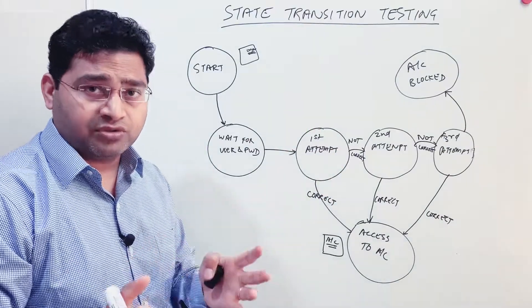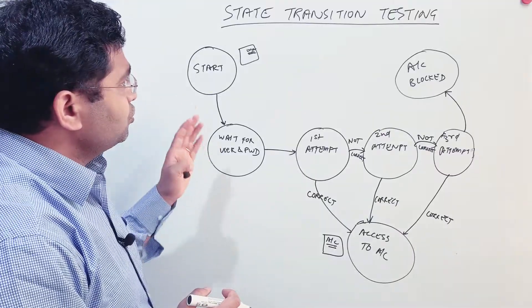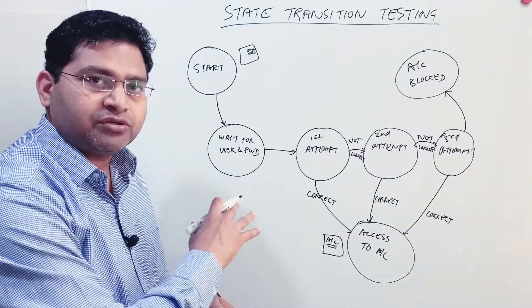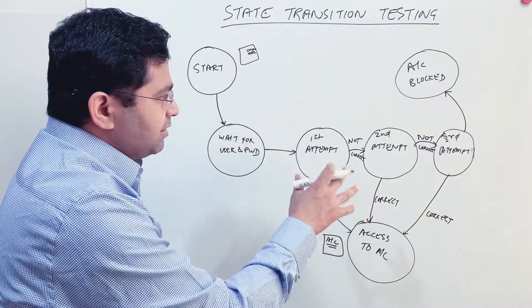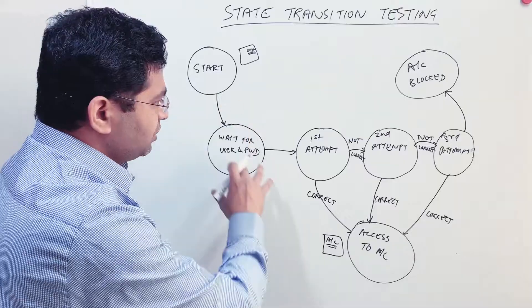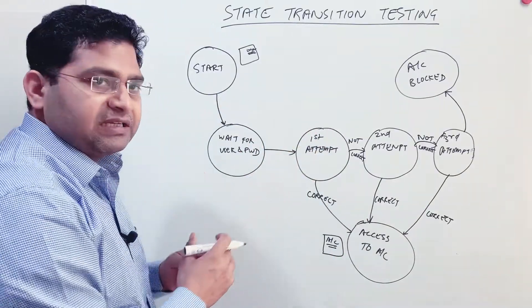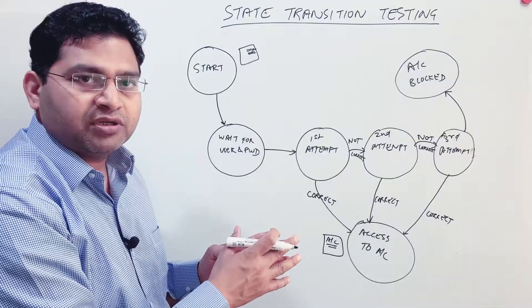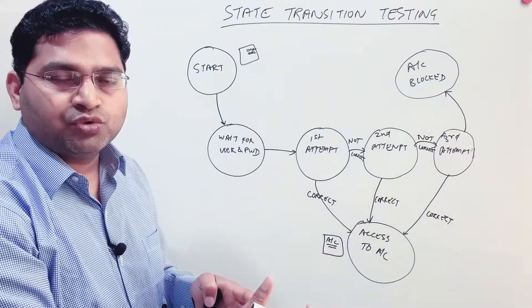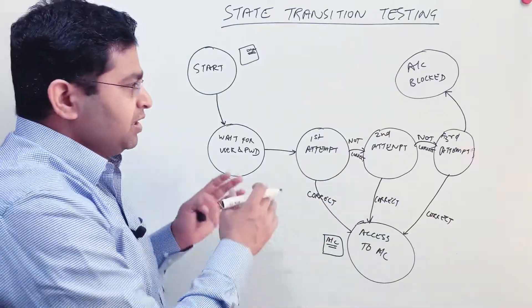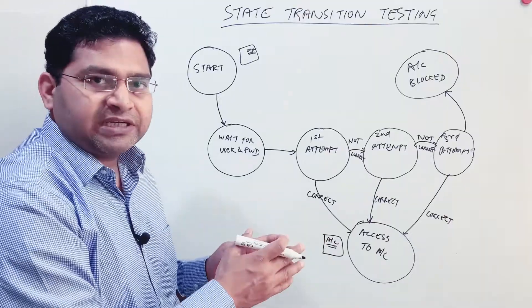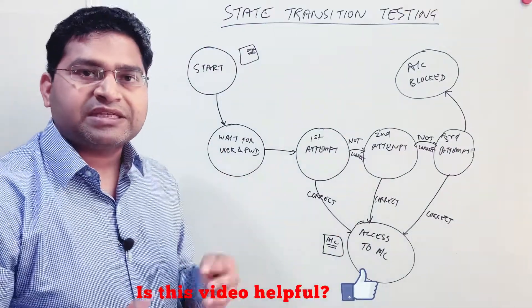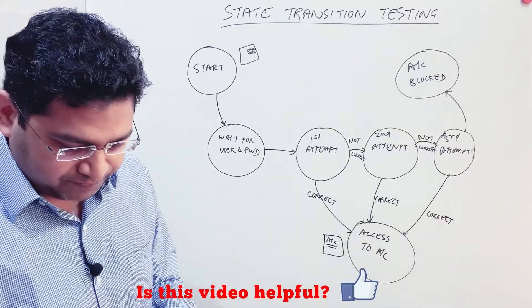State transition testing is a black box test design technique where you define the application or module with different states and come up with test cases based on those states and how the application behaves. For example: user provides wrong username and password in the first two attempts but correct in the third — they should get access to account. If all three attempts are wrong, the account should be blocked.